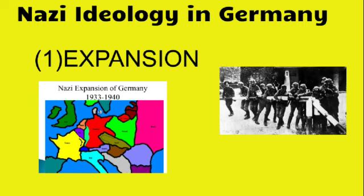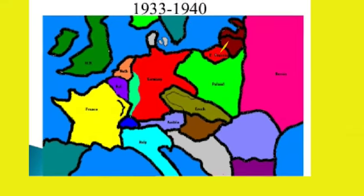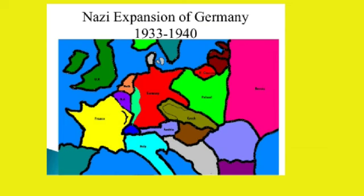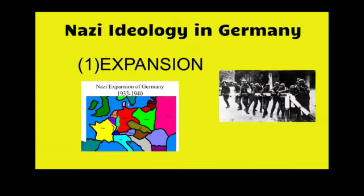The first and foremost important feature of Nazist ideology is expansion. Nazis wanted to expand their territorial jurisdiction; they wanted to make the German Empire a powerful empire. They wanted to conquer other areas and merge them with Germany so that the German empire would become a very large and powerful empire.